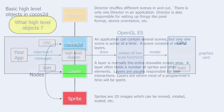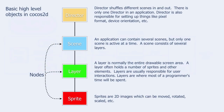What kind of high-level objects are there? Here are some basic ones. The director is an object that shuffles different scenes in and out. There is only one director in an application. The director is also responsible for setting up things like pixel format, device orientation, etc.